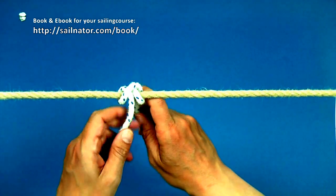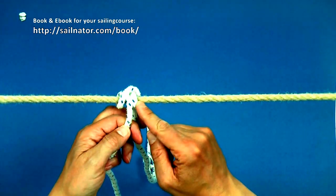The clove hitch is tied correctly when those two turns are parallel and crossed by a line.